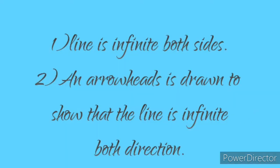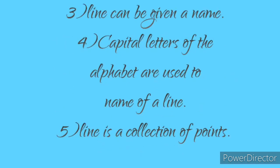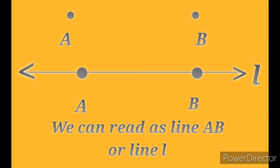Some important notes about Line: First, a line is infinite on both sides. Second, an arrowhead is drawn to show that the line extends infinitely in both directions. Third, a line can be given a name. Fourth, capital letters of the alphabet are used to name a line. Fifth, a line is a collection of points. We use two capital letters to name a line, and we read it as Line AB or Line BA.